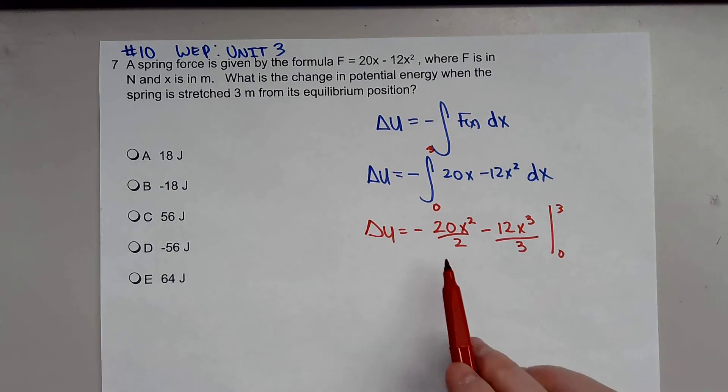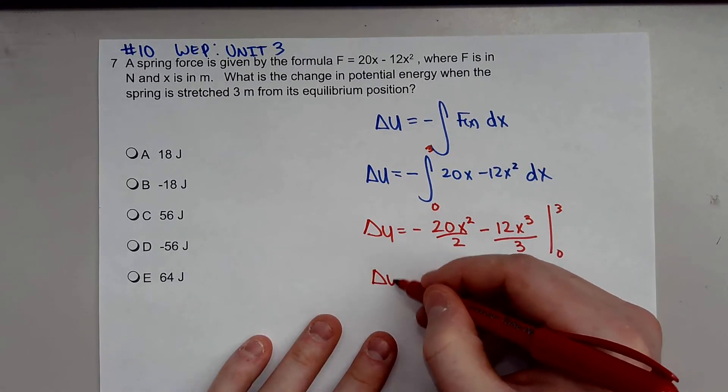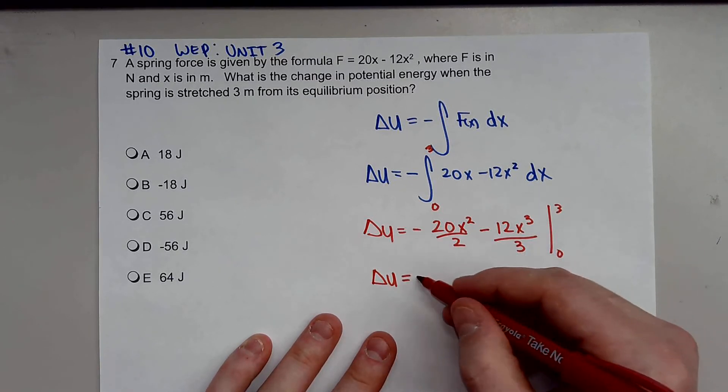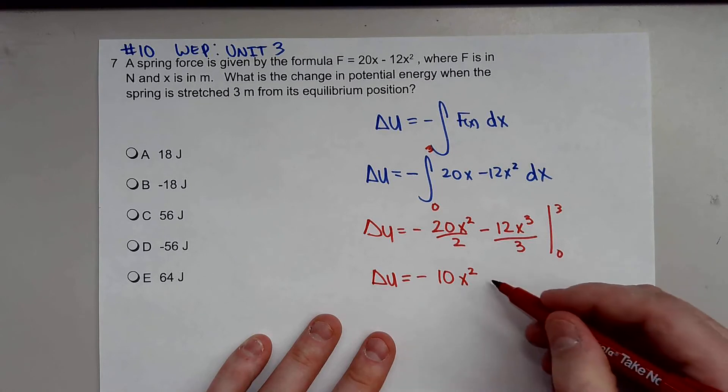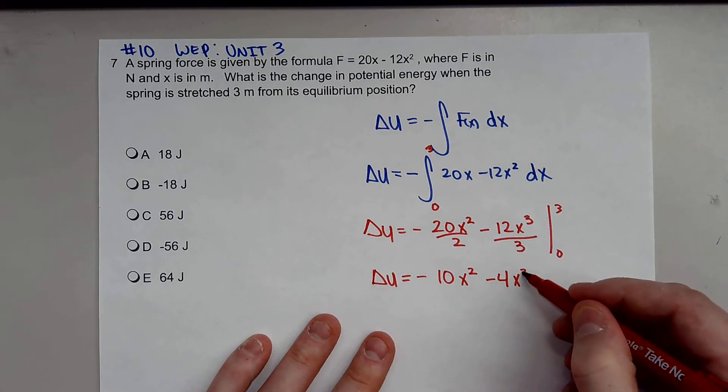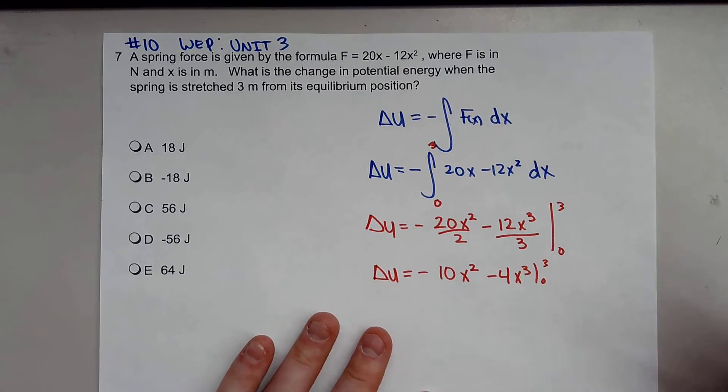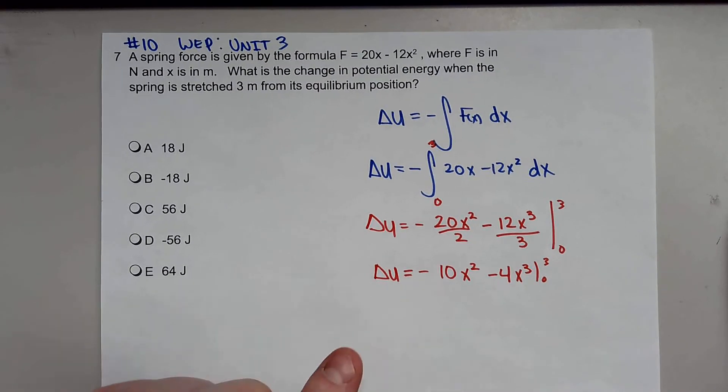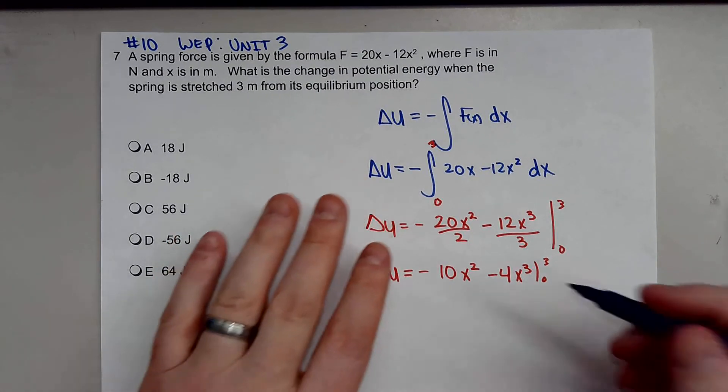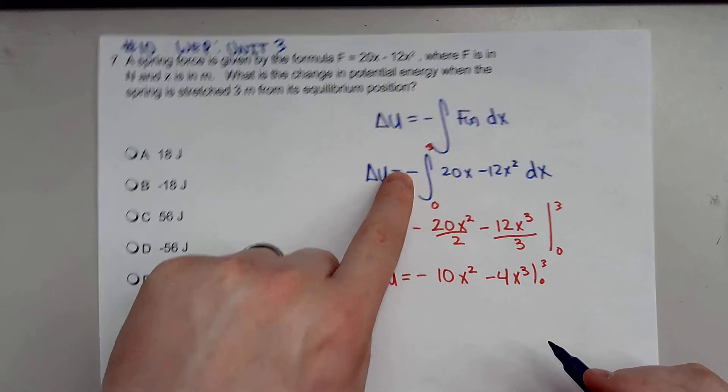Now when we do this, we can actually simplify this. Our potential energy function is negative 10X squared minus 4X cubed, from 0 to 3. Remember, do not forget that negative right there. It kind of pops out. If that's negative, this is negative.